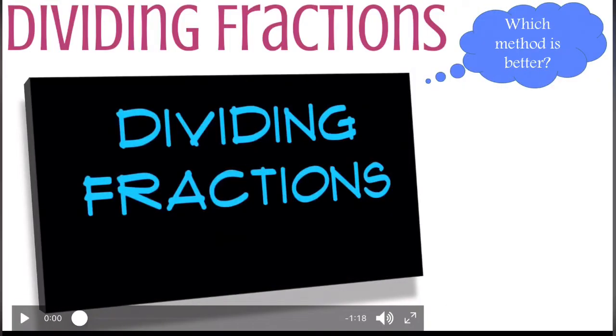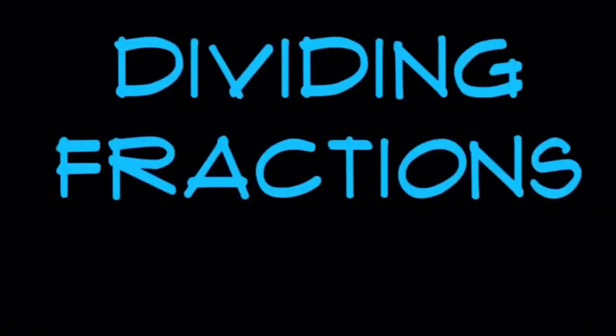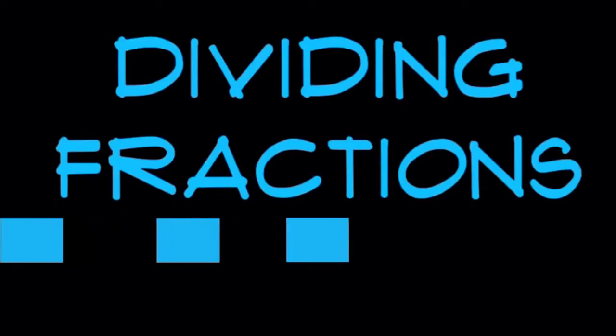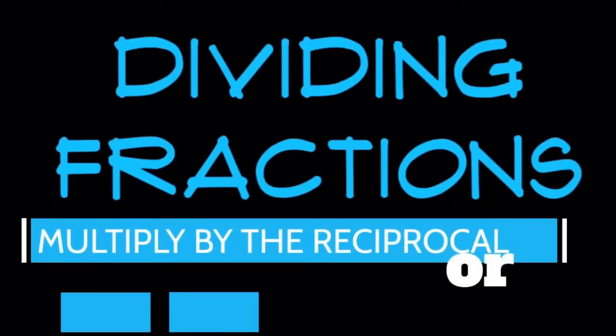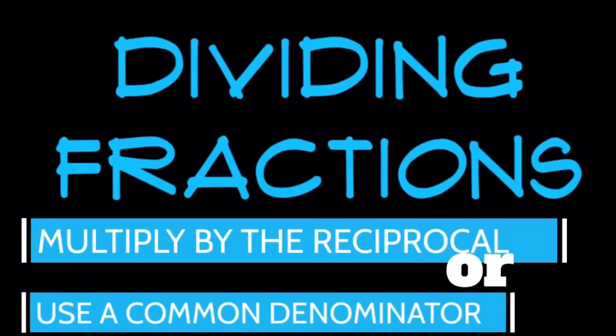Now that you've seen how to divide fractions using a common denominator we are going to look at two methods side by side calculated mathematically. You can choose which method you like better. When dividing fractions which method is easier? Do we multiply it by the reciprocal or should we use a common denominator?